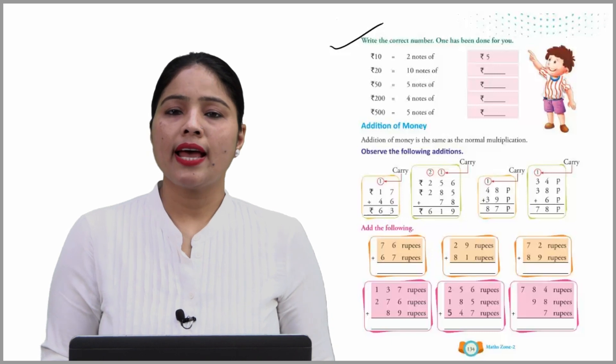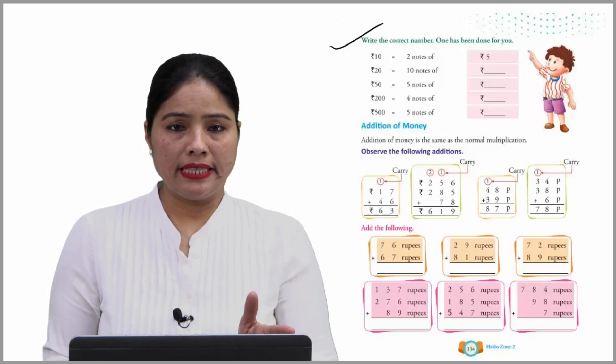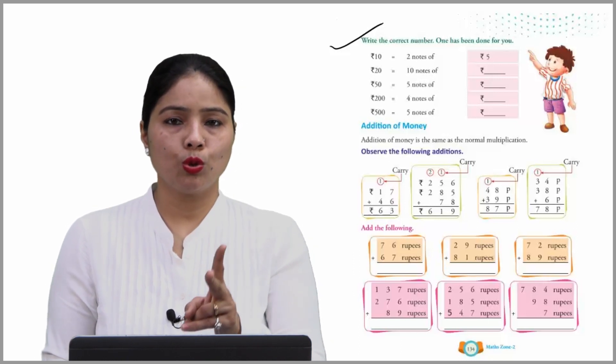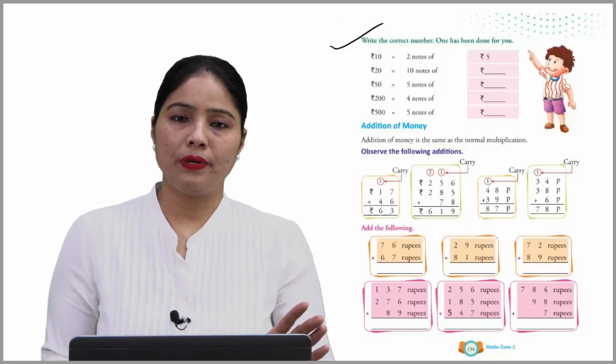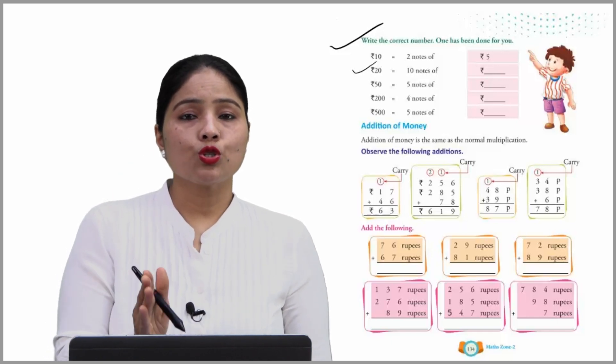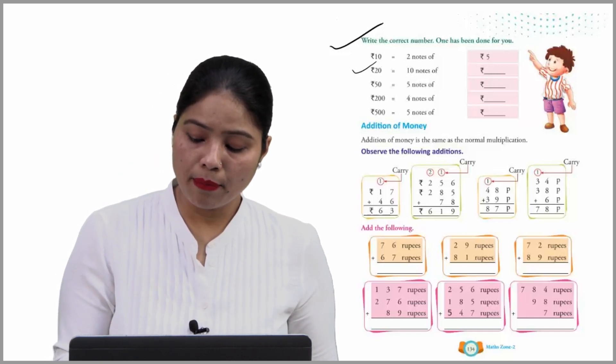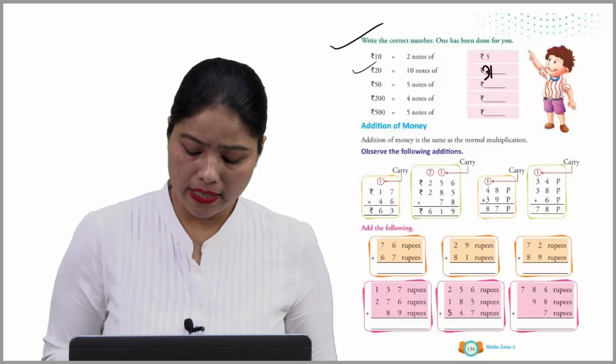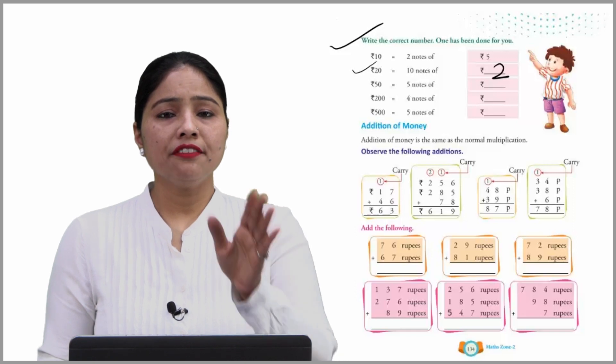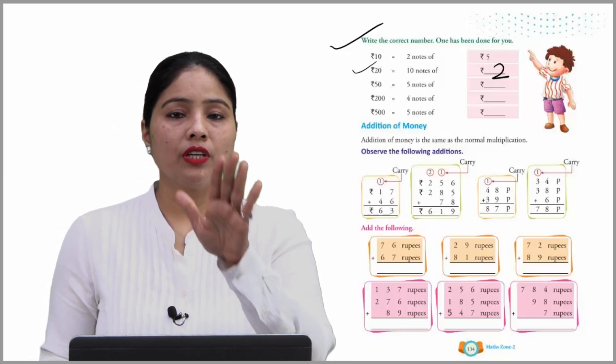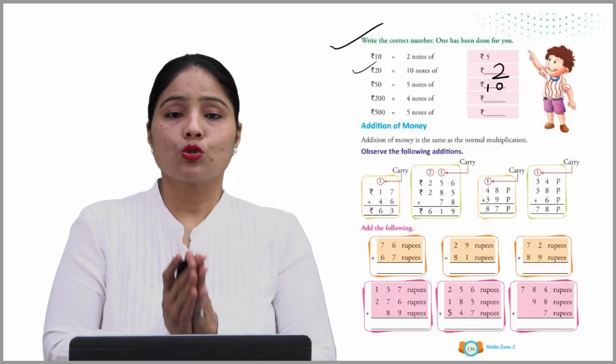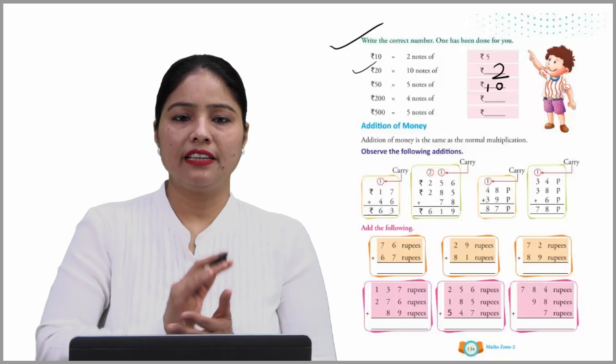Write the correct number. One has been done for you. 10 rupees - how does 10 rupees form? Two notes of 5. Similarly, if you have 20 rupees, you can say 10 notes of 2. If you have 50 rupees, you can say 5 notes of 10. This is the simple method, just practice and fill it.